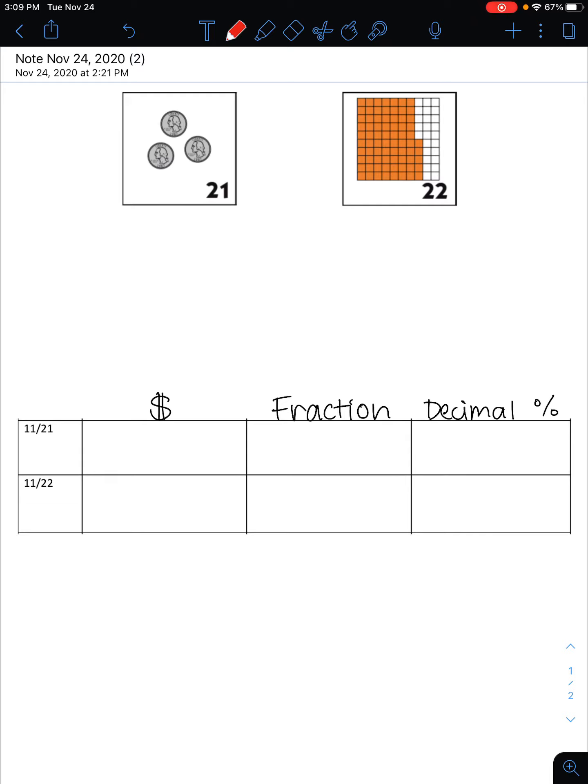Let's start by looking at the 21st. In this picture, I see three coins. One, two, three. All three of these coins are quarters. I know that each quarter is worth 25 cents.